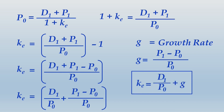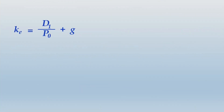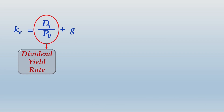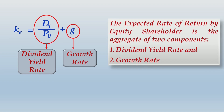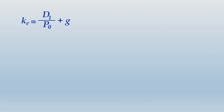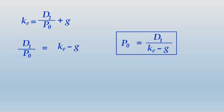In the formula Ke = D1/P0 + g, the component D1/P0 is identified as the dividend yield rate and g stands for the growth rate. The expected rate of return by the equity shareholder is the aggregate of these two components. Rearranging: D1/P0 = Ke − g, and cross-multiplying gives P0 = D1 / (Ke − g). This is the share valuation formula developed by Gordon.